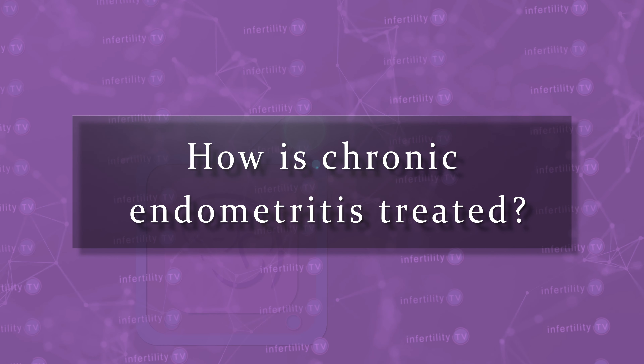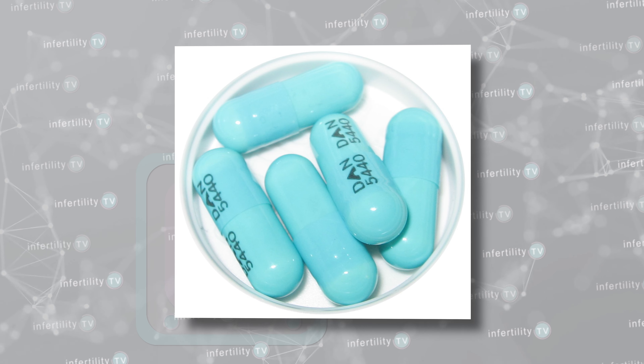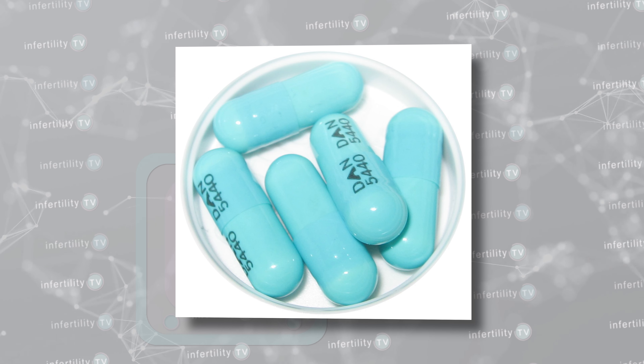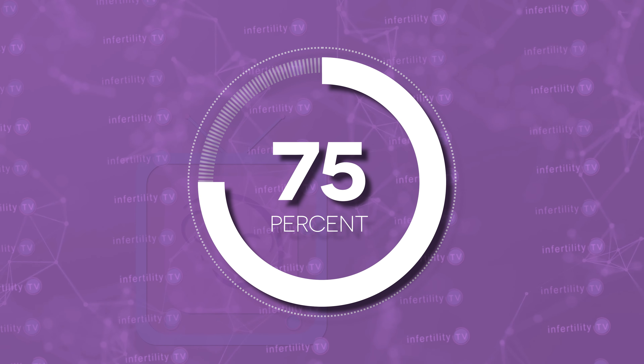How is chronic endometritis treated? Antibiotics are currently the treatment used to try to get rid of chronic endometritis. The first antibiotic used to treat endometritis is called doxycycline. Doxycycline treats a wide variety of bacteria and is easy to get and inexpensive. The treatment course is usually twice a day for two weeks.